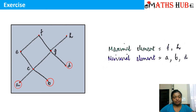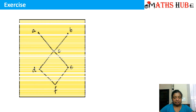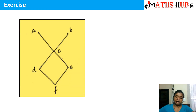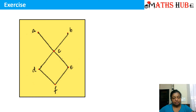In the next example, according to the hierarchy F is lying at the bottom. Then at the next level we have D and E, followed by C, and at the top level we have A and B. So clearly the minimal element is F and the maximal elements are A and B.